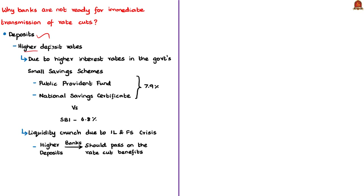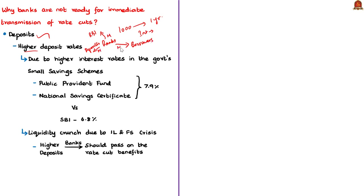Because small savings schemes offer higher returns, people prefer to invest there rather than in commercial banks, putting banks in a difficult position to cut their deposit rates. Another reason deposit rates remain high is the liquidity crunch caused when the NBFC IL&FS failed to repay loans from September 2018, creating a shortage of money within the system. Banks kept deposit rates high to attract more deposits.